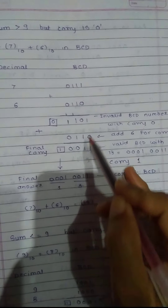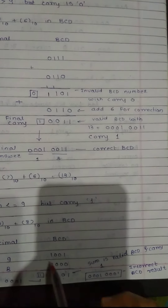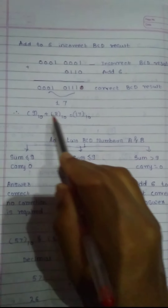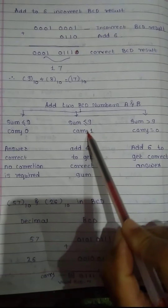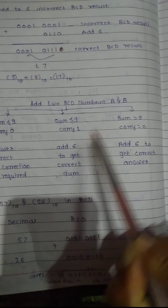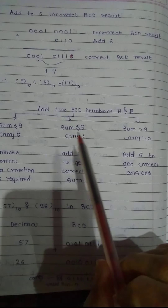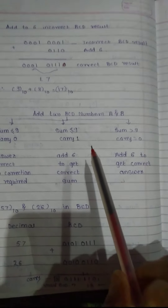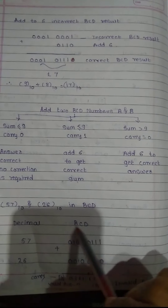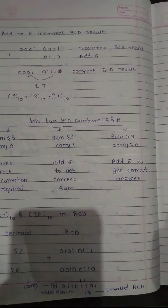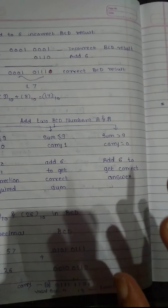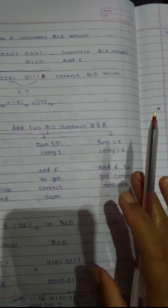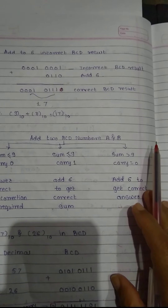Here the original result was invalid BCD so we added 6. In the carry case it was valid BCD digits but the answer was not correct, so we also add 6 to correct it. Summary: sum less than or equal to 9 with carry 0 — no correction required; sum less than or equal to 9 but carry 1 — add 6 to correct; sum greater than 9 with carry 0 — add 6 for correction. This completes the second chapter. In the next lecture we study combinational circuits.